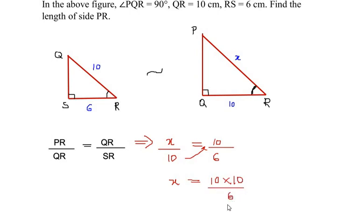Or we can just simplify it as 6 and 10 goes in the table of 2: 2 3 times and 2 5 times. So we have 50, that is 10 times 5 is 50, over 3. So this is the value of x or this is the value of PR from the triangle PQR.